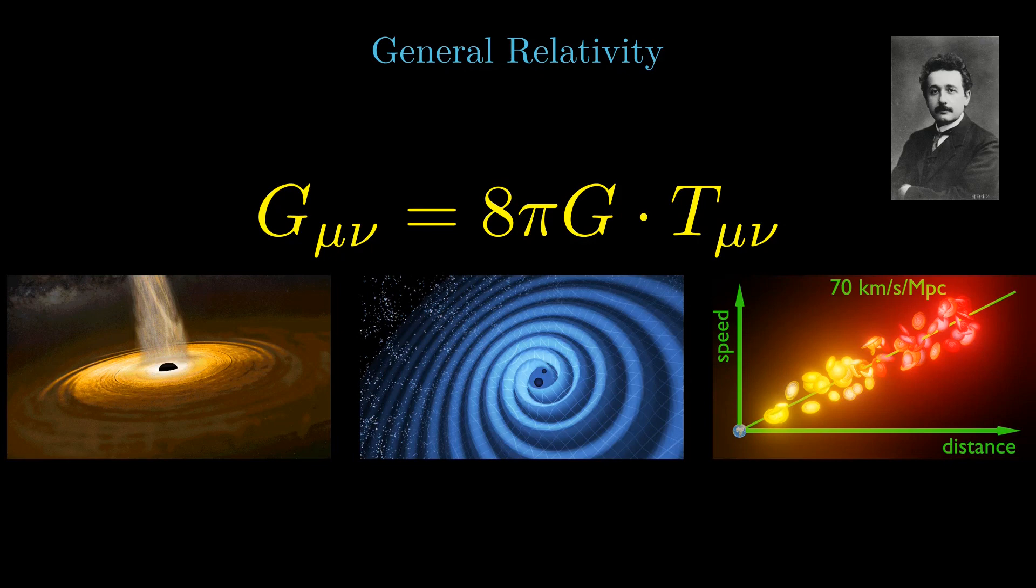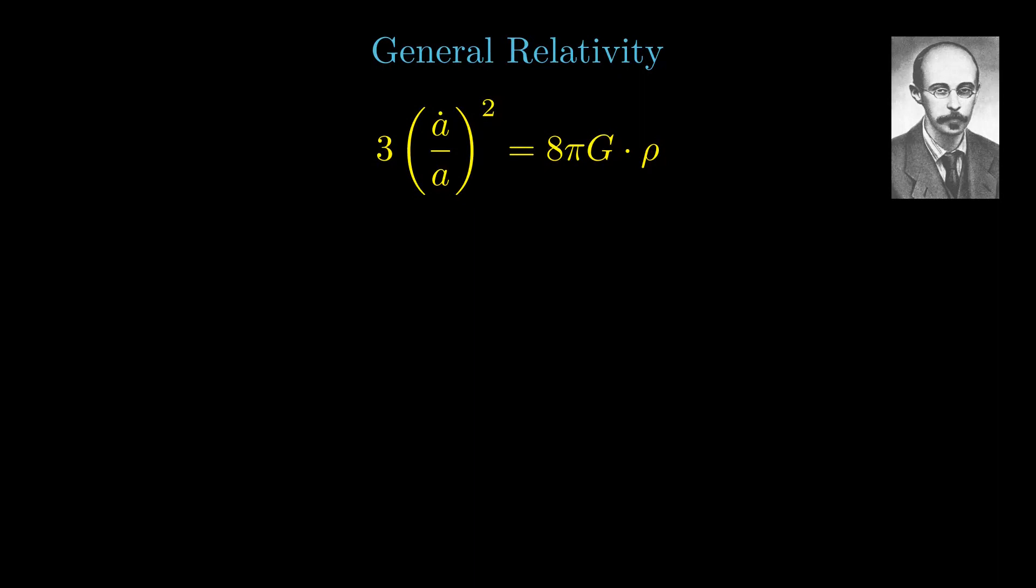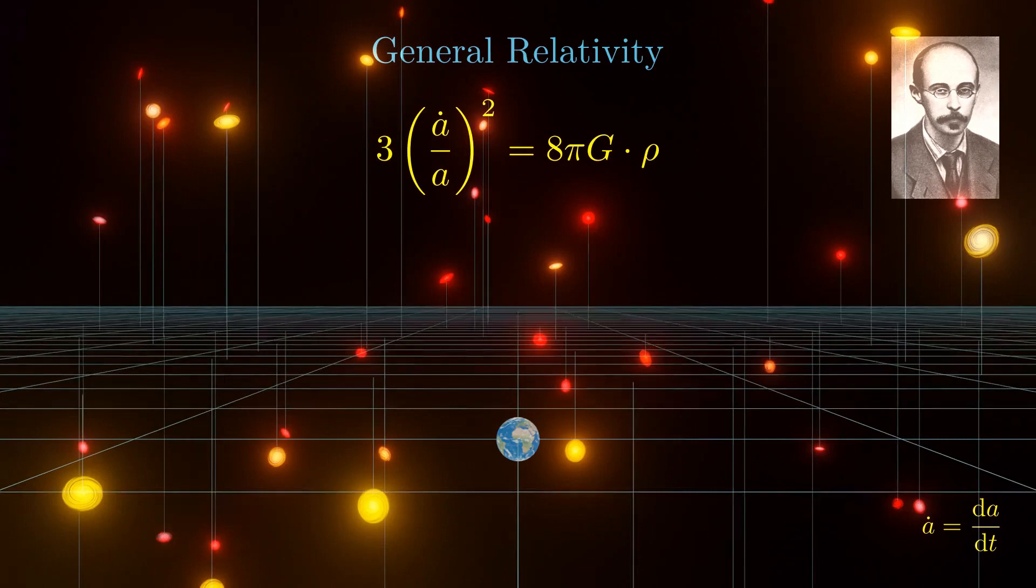The left-hand side of the equation describes the curvature of the four-dimensional spacetime. It simplifies, in our case, to the well-known Friedmann equation, where a is the time-dependent scale factor of the universe. All distances scale with this function. If it has the value 2, all distances double. If it has the value 3, all distances are 3 times larger and so on.